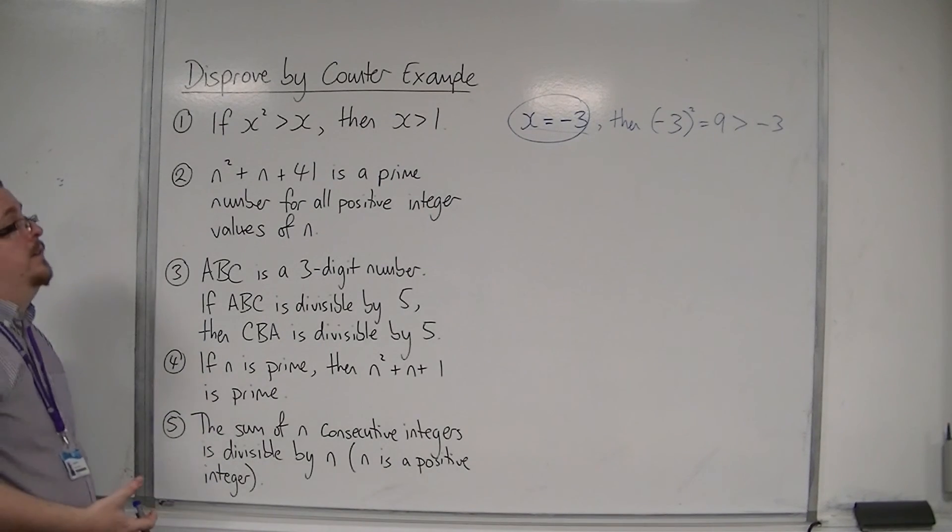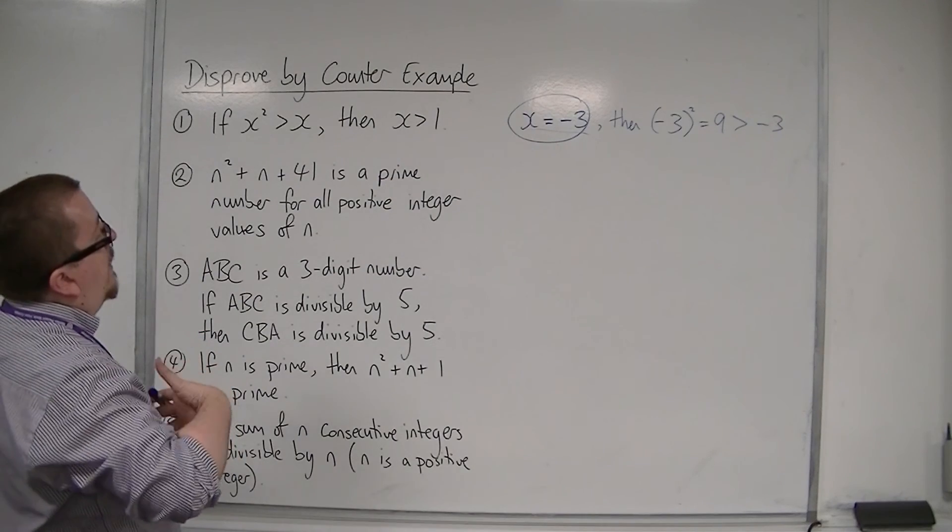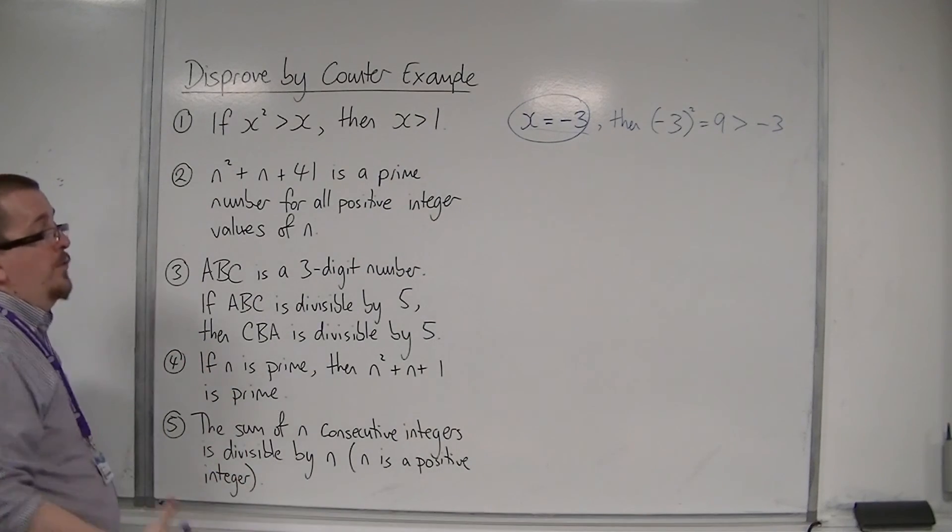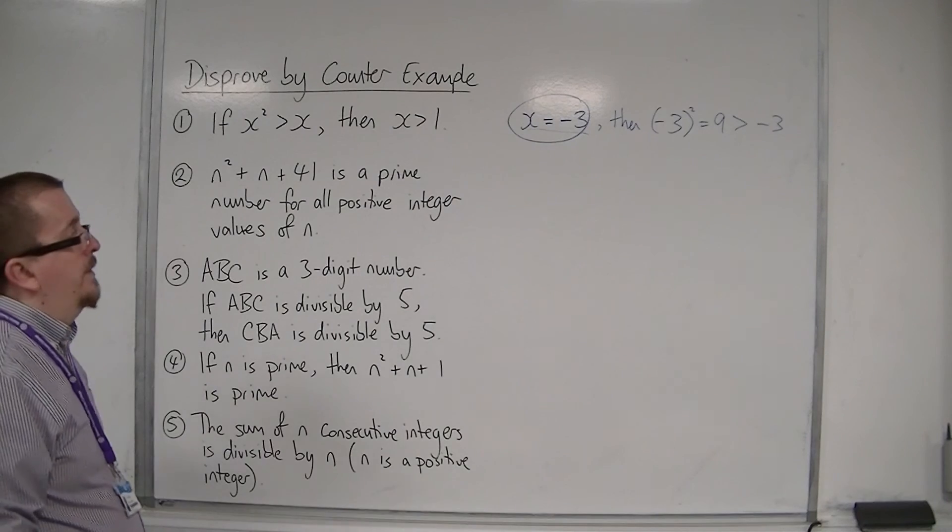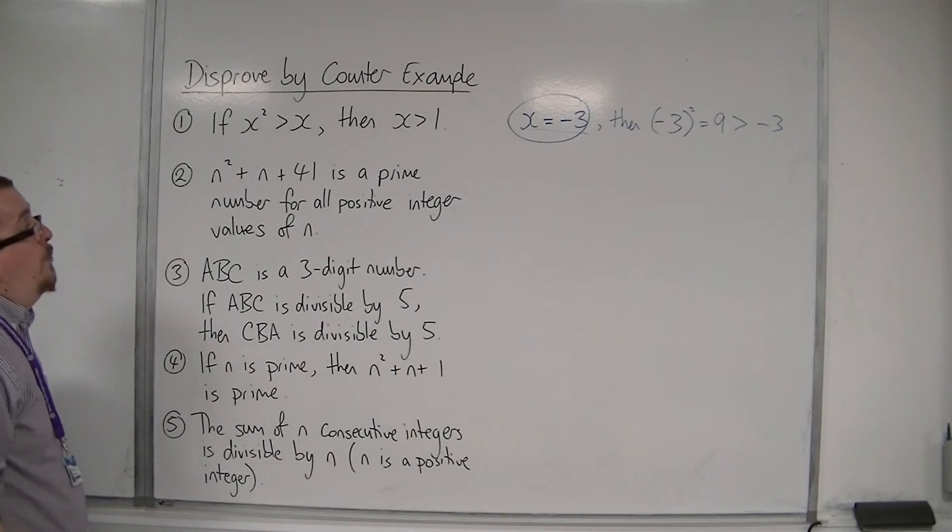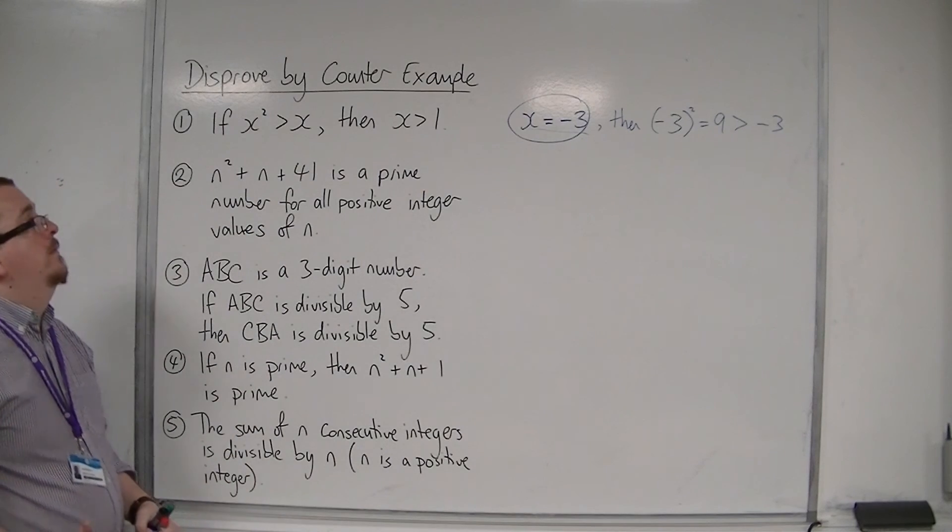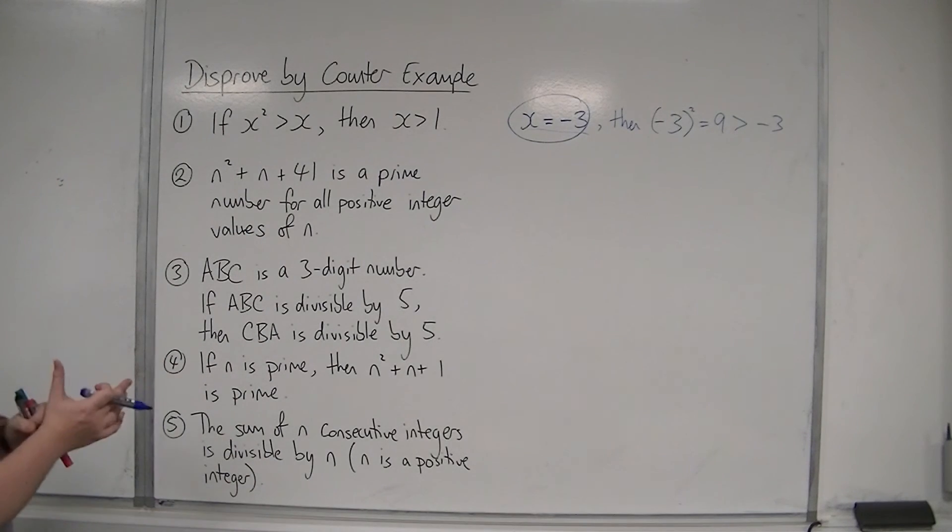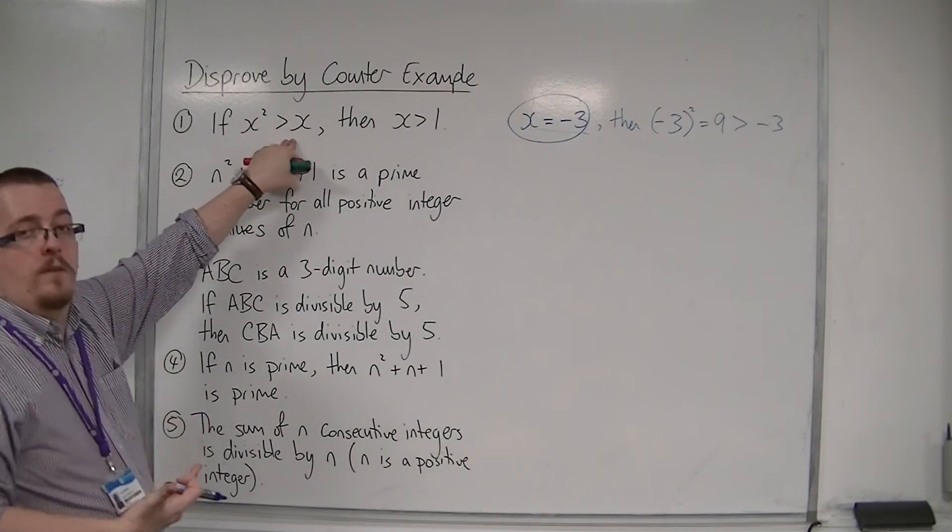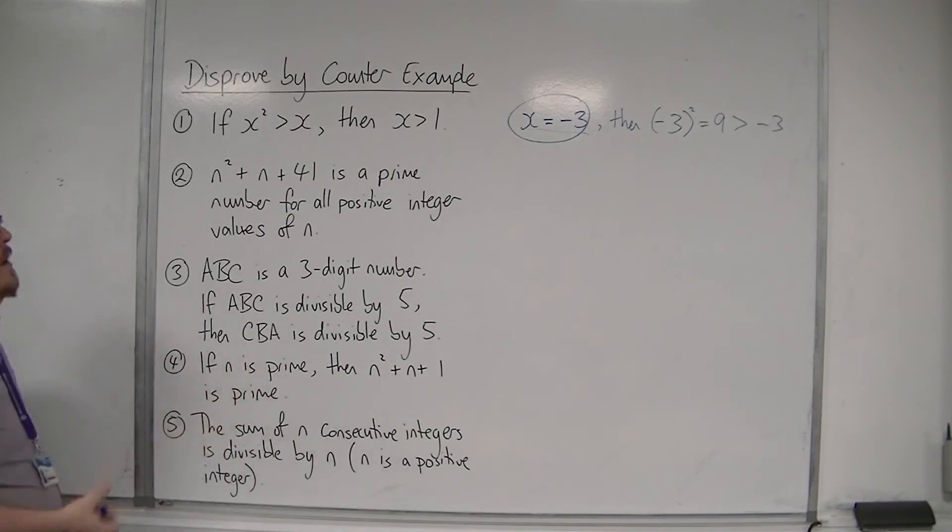So x is equal to minus 3 is one example where number 1 fails. In fact, you could have chosen minus 2, minus 3, minus 4, minus 5. Minus 1, of course, would have been all right then. So minus 1 squared is greater than 1, and then minus 1 doesn't work in that second statement. So that would have been fine.